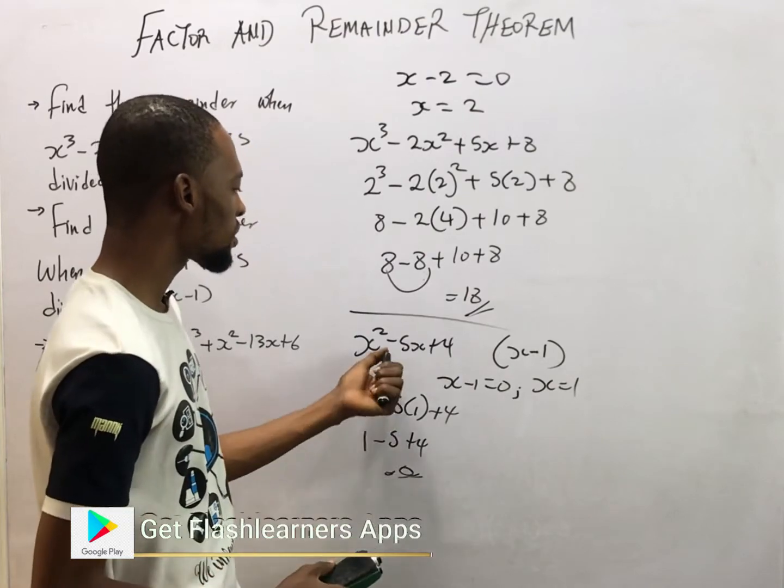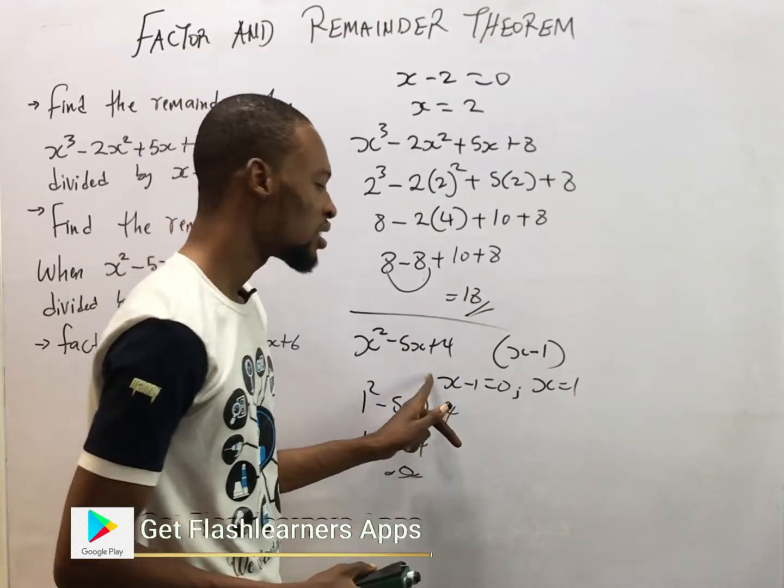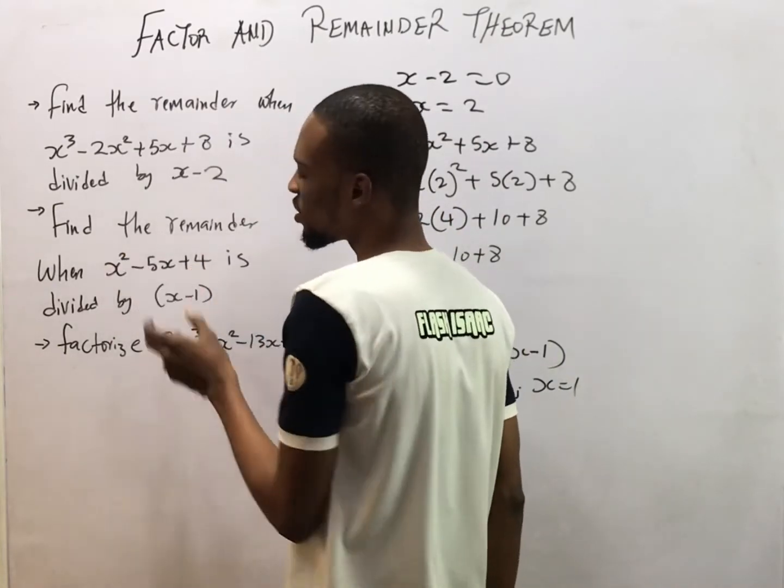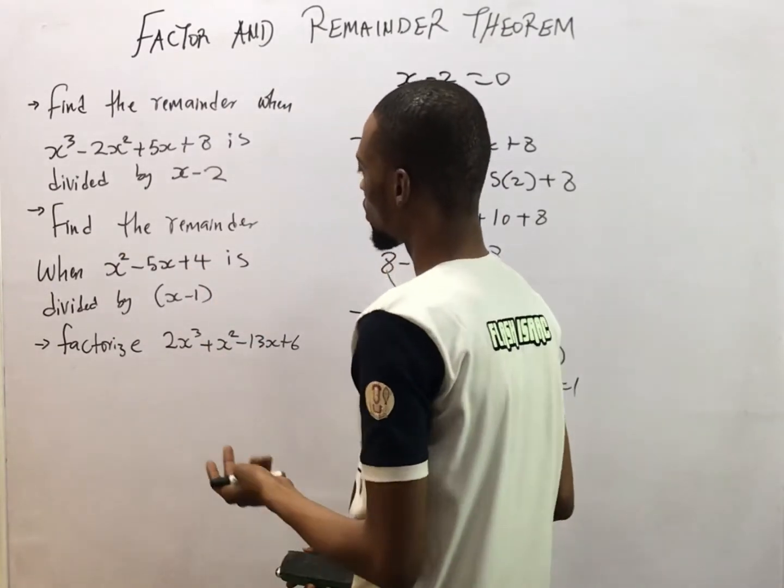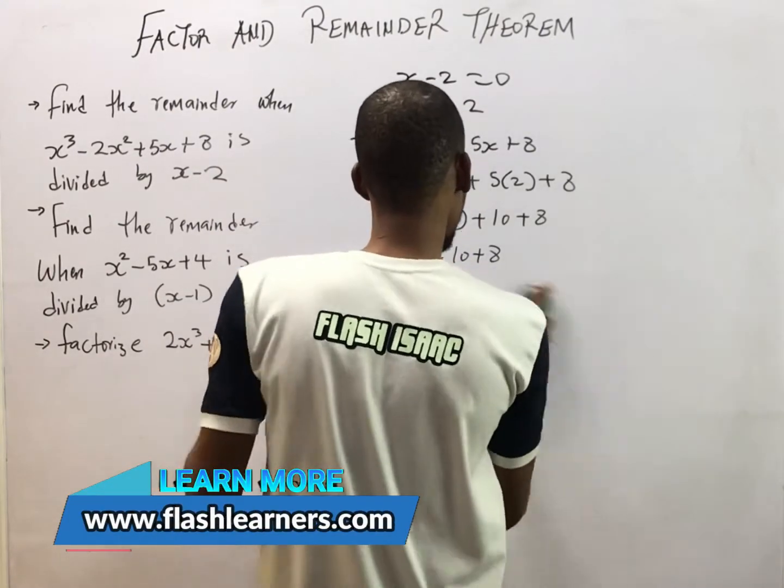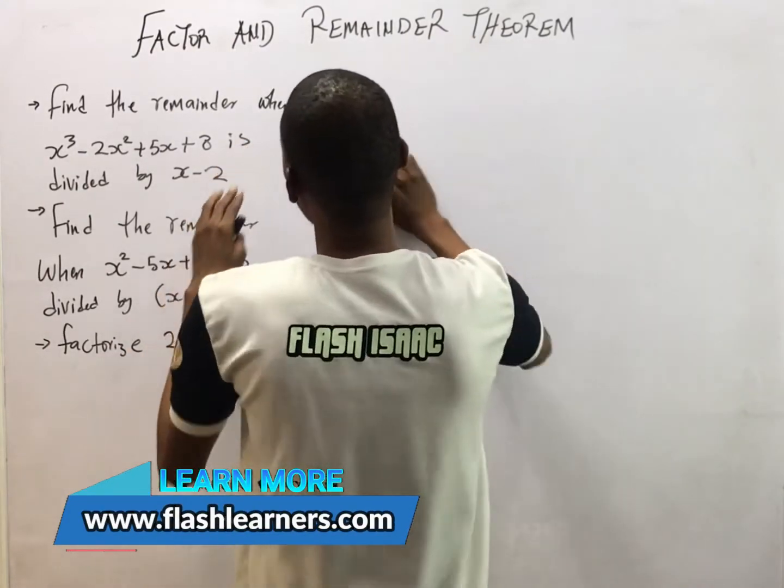Now, substituting this into the equation, we got 0. This implies that S minus 1 is a factor of this polynomial. Now, look at factorize. So factorizing polynomial is a bit longer than looking for remainder.